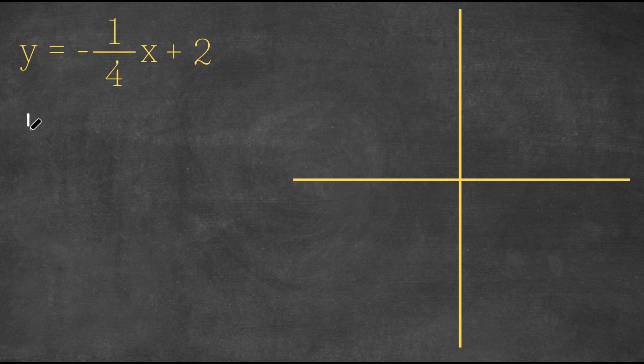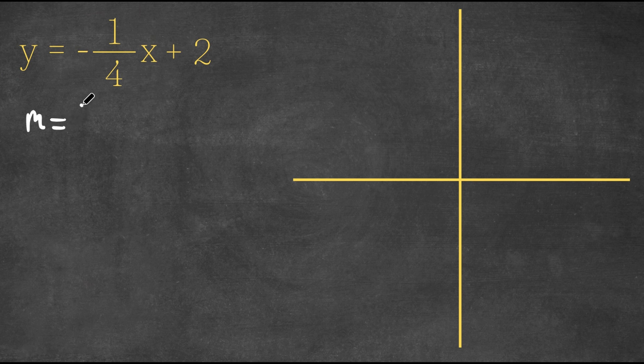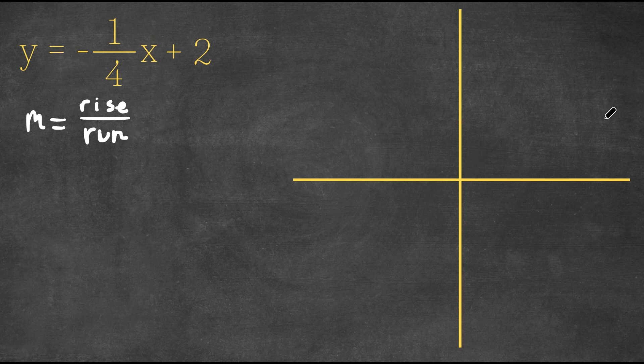Now, if you guys remember, the slope also known as m is equal to the rise over the run. The rise is how much you go up or down by, and the run is how much you go to the left or to the right by.